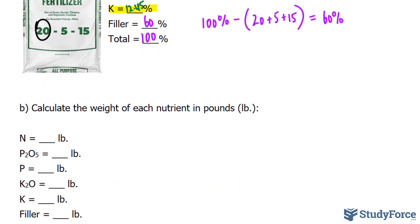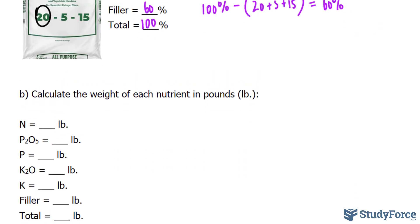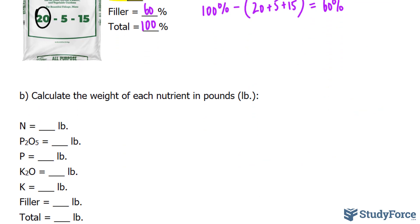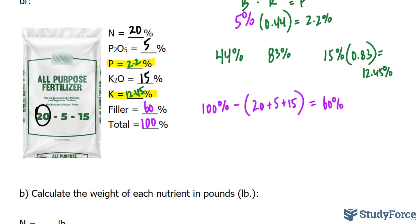Let's move on to question B. So for this, they expect us to calculate the weight of each nutrient in pounds. Of course, we'll need the percentages that we calculated earlier, that we found earlier.